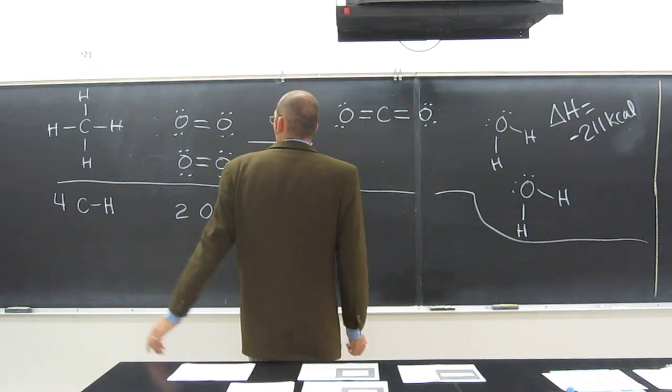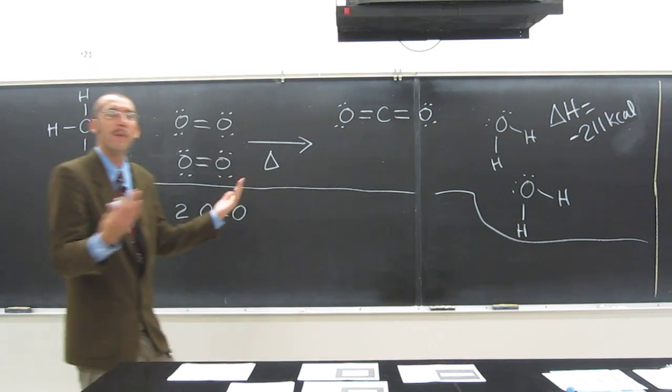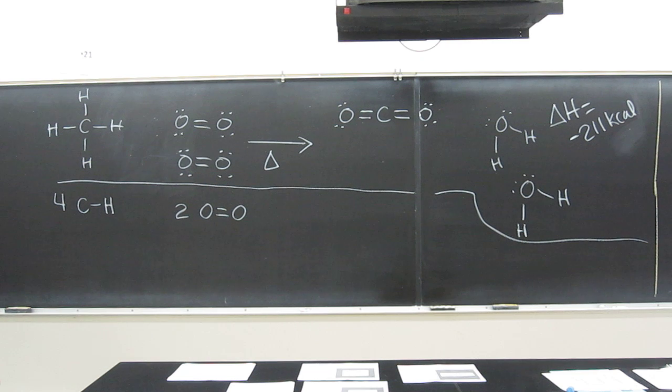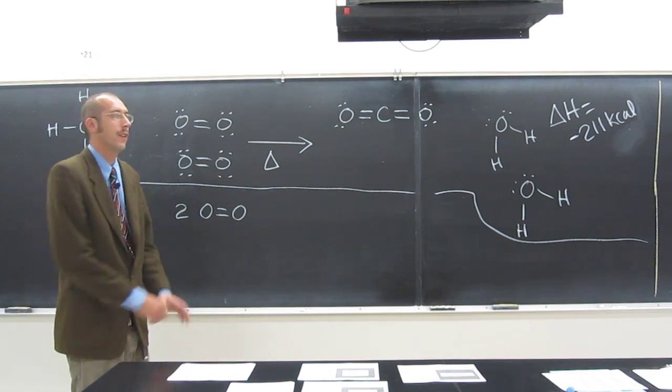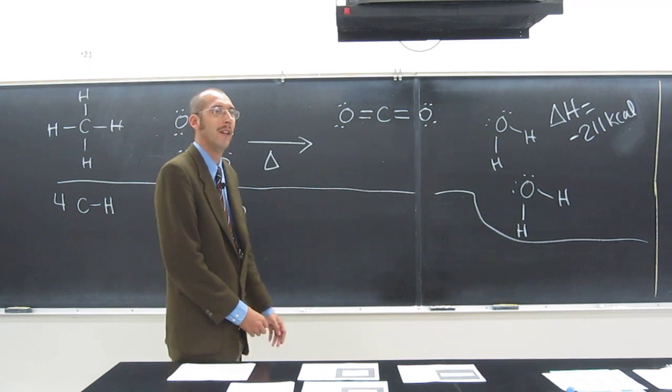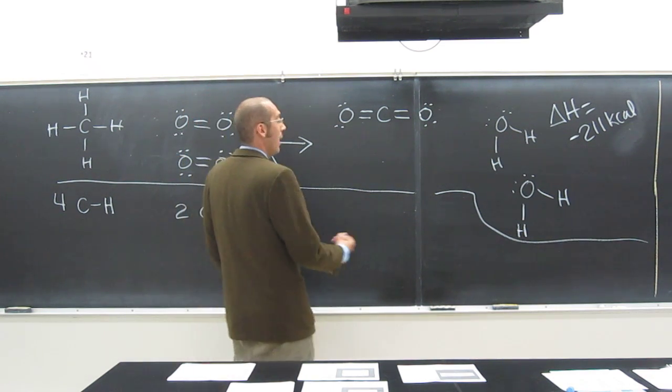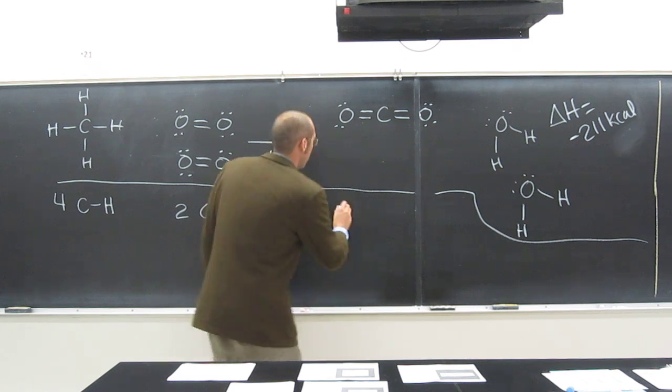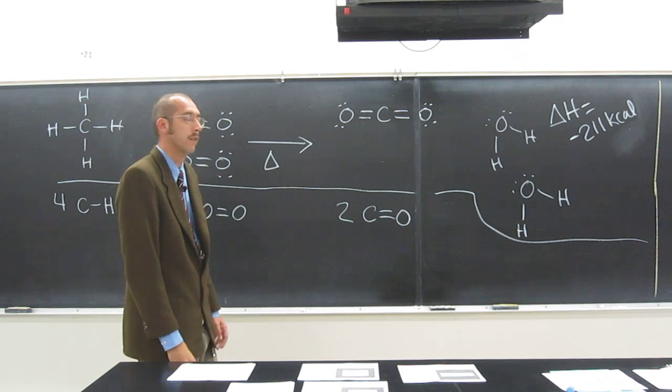What about over here? Do we have any CH bonds? No. So what must have happened to all those CH bonds? They all got broken. Is everybody cool with what I'm doing? But we do have what type of bonds? CO bonds, CO double bonds, right? How many of those do we have? Two. So we got two CO double bonds. Were those present in the reactants? No, so those things must have been formed.